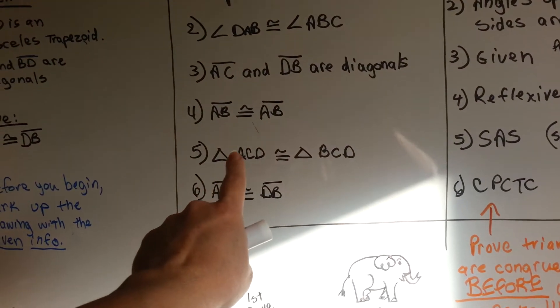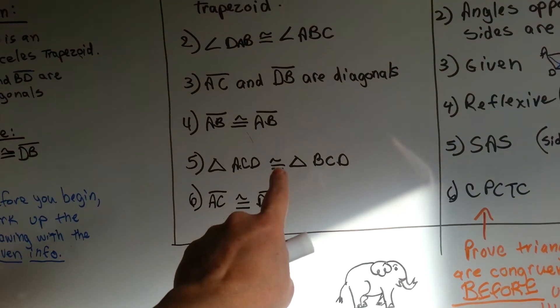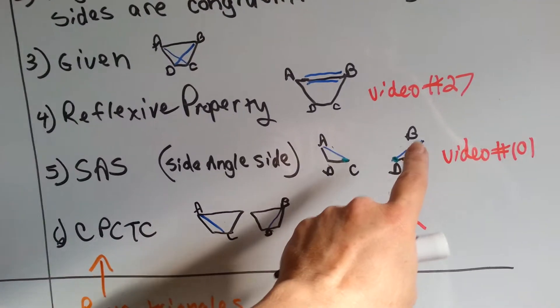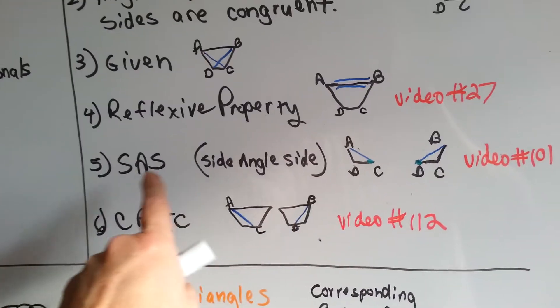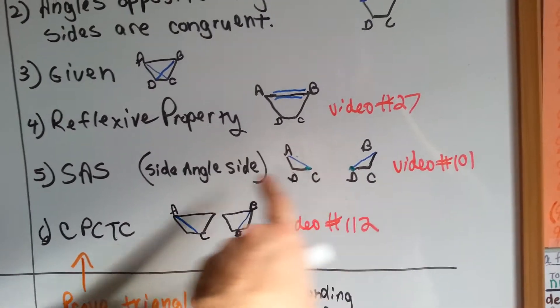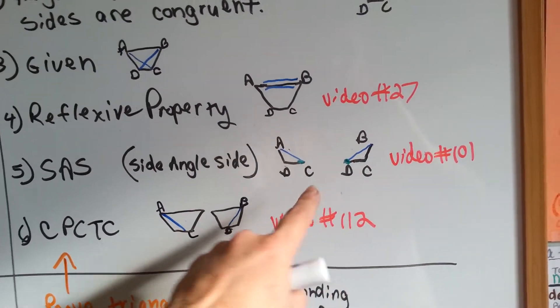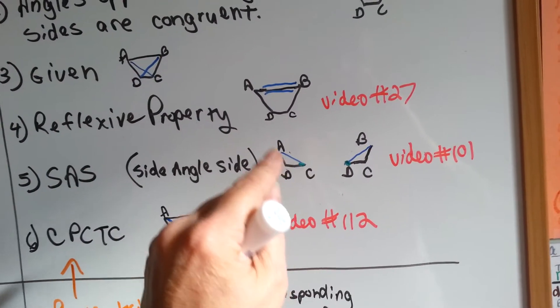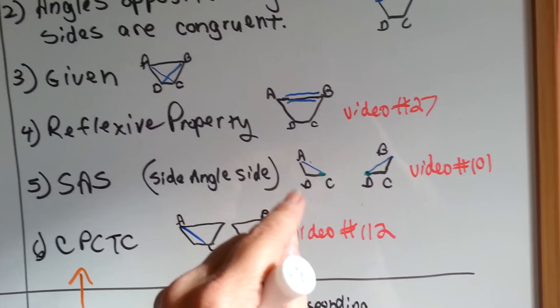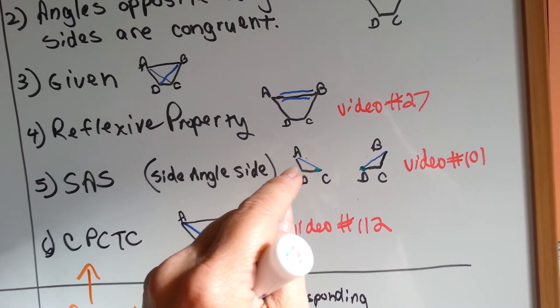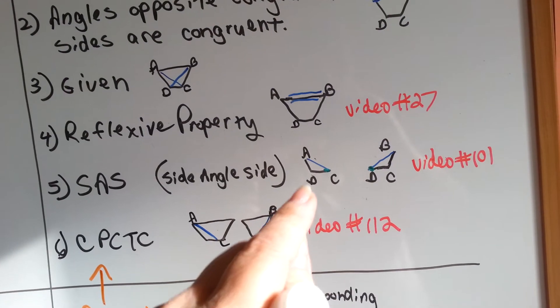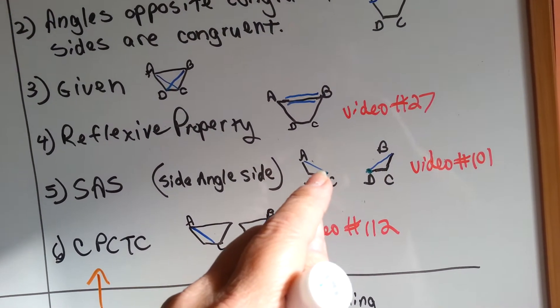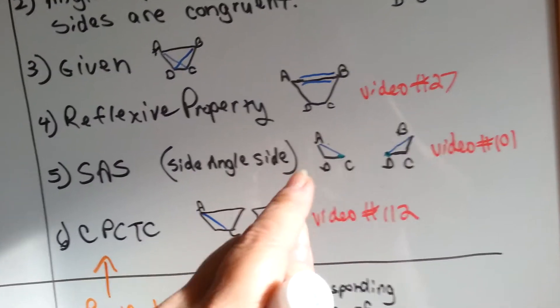Number five, triangle ACD is congruent to BCD. That's side angle side. Side angle side is in video number 101. But it's basically saying that if you were to split this apart, that that triangle is congruent to that triangle. And the reasoning is side angle side. That's congruent to that. That's congruent to that. Which means that angle is congruent to that one.